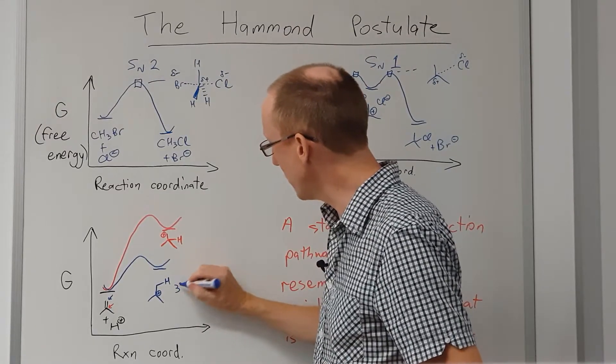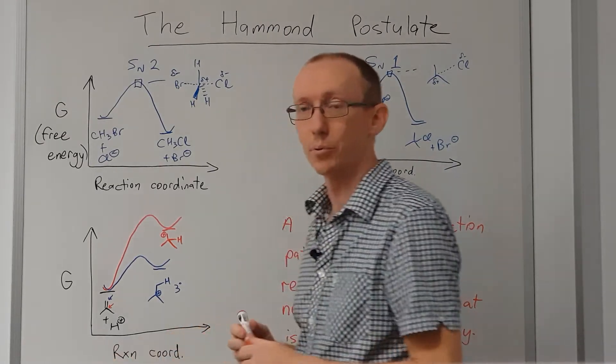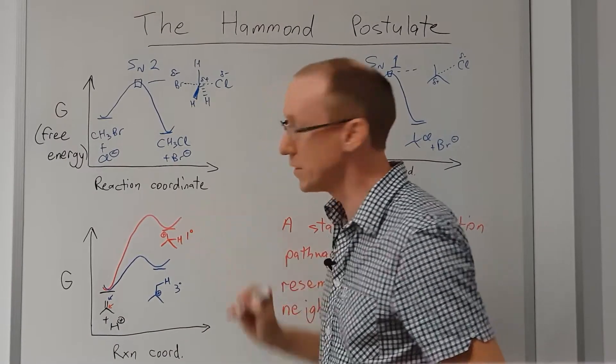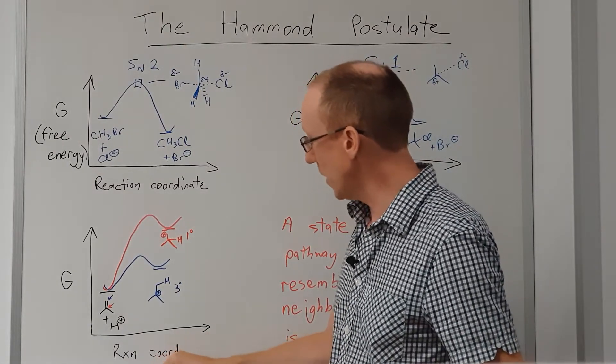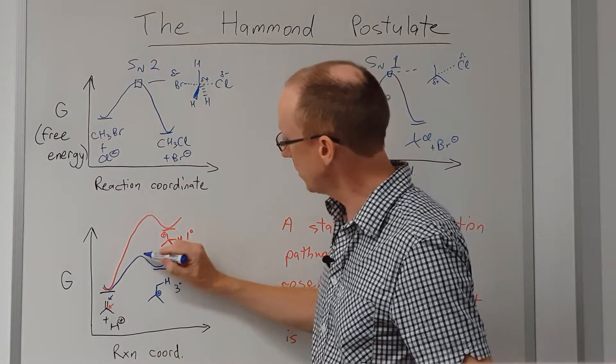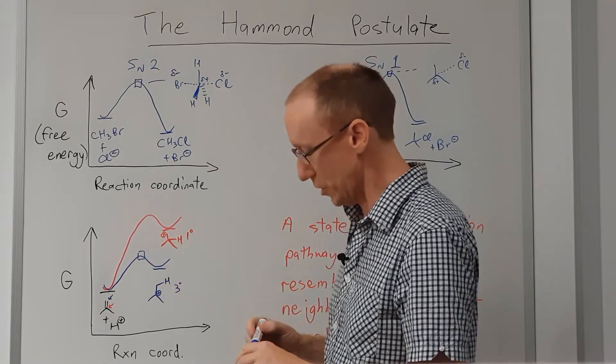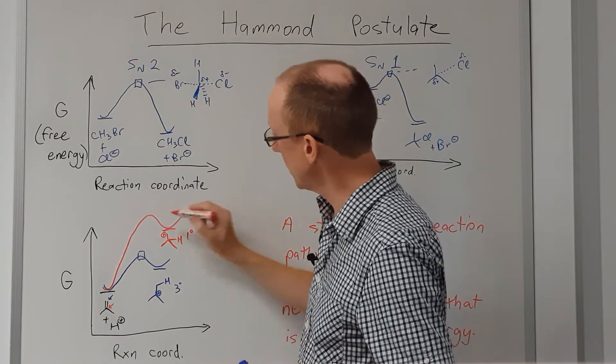We know that tertiary carbocations are much more stable than primary, and so we know those intermediates are going to be different in energy. But what we also know is that the transition states leading to each of those are going to be similar in structure to the intermediates themselves.